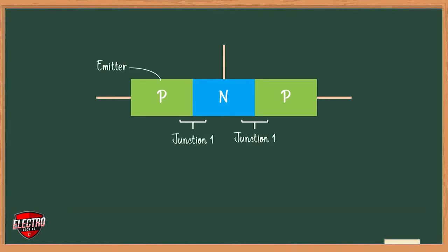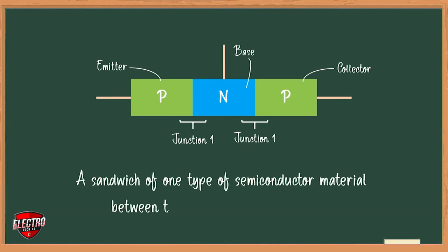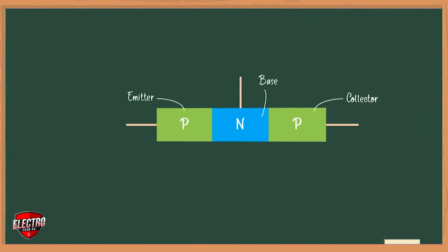A junction transistor is simply a sandwich of one type of semiconductor material between two layers of the other type. Material sandwiched between two layers of P-type material is described as a PNP transistor. An NPN transistor consists of a layer of P material sandwiched between two layers of N-type material.